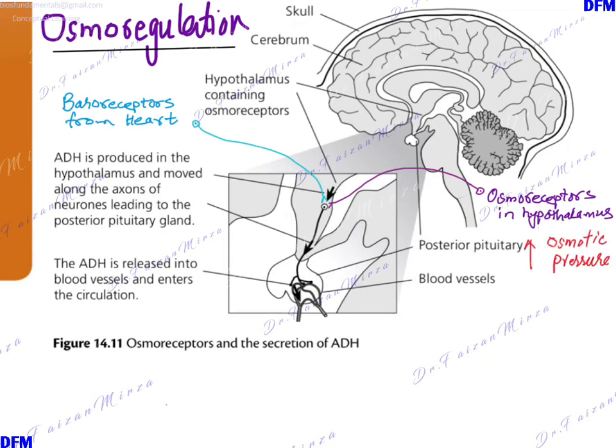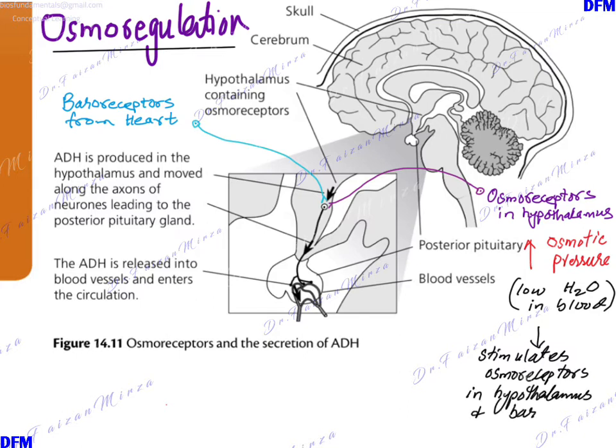If the osmotic pressure is high, a high osmotic pressure means that there is low water in blood. Low water means there is high solute concentration. In this case, this will stimulate the release of a hormone called ADH - antidiuretic hormone. This is synthesized in the hypothalamus but released from the pituitary, and the posterior pituitary is involved for this process.